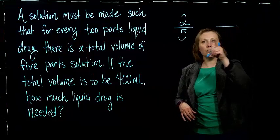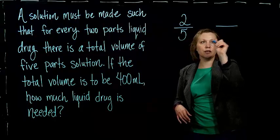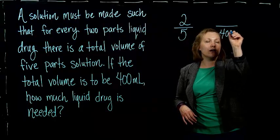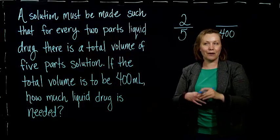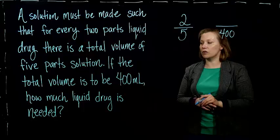We put our total volume on the bottom of our first ratio. So when we create our second ratio and what we're looking for, we'll also make our total volume in the bottom, so 400.